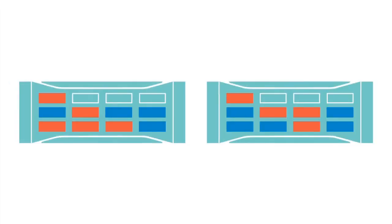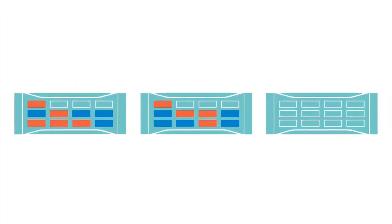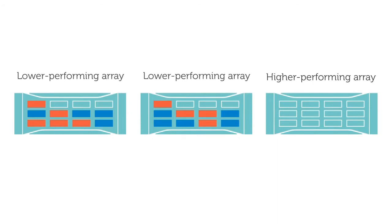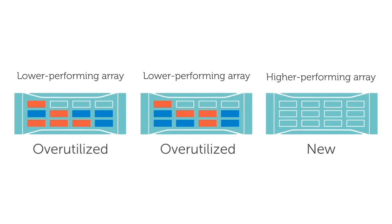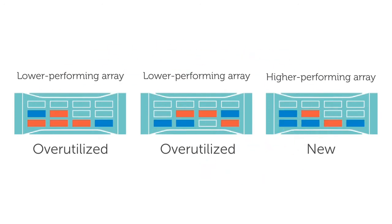So the first thing that happens is we add a new higher-performing array into the environment to try to address the performance issue. The capacity load balancer notices that the new array is empty — it's not using any of its capacity — and the two former arrays are both roughly half utilized. So the capacity load balancer will add some of the capacity load to the newer array that's just been added to the pool.